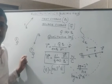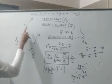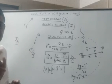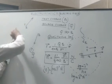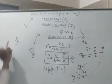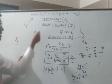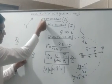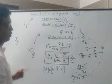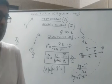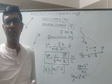Electric field lines may be defined as the imaginary lines which represent the electric field in a given region. Due to a positive source charge, electric field lines are directed away — they originate or emanate from the positive charge. If the source charge is negative, the electric field lines tend to terminate or end at the negative source charge.